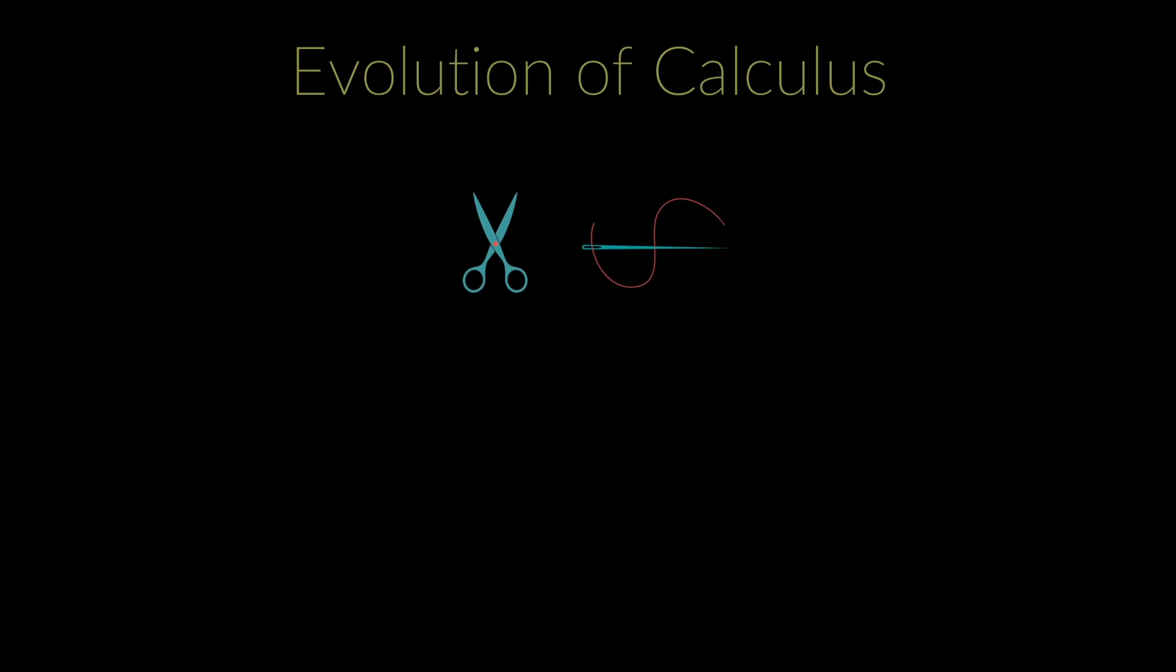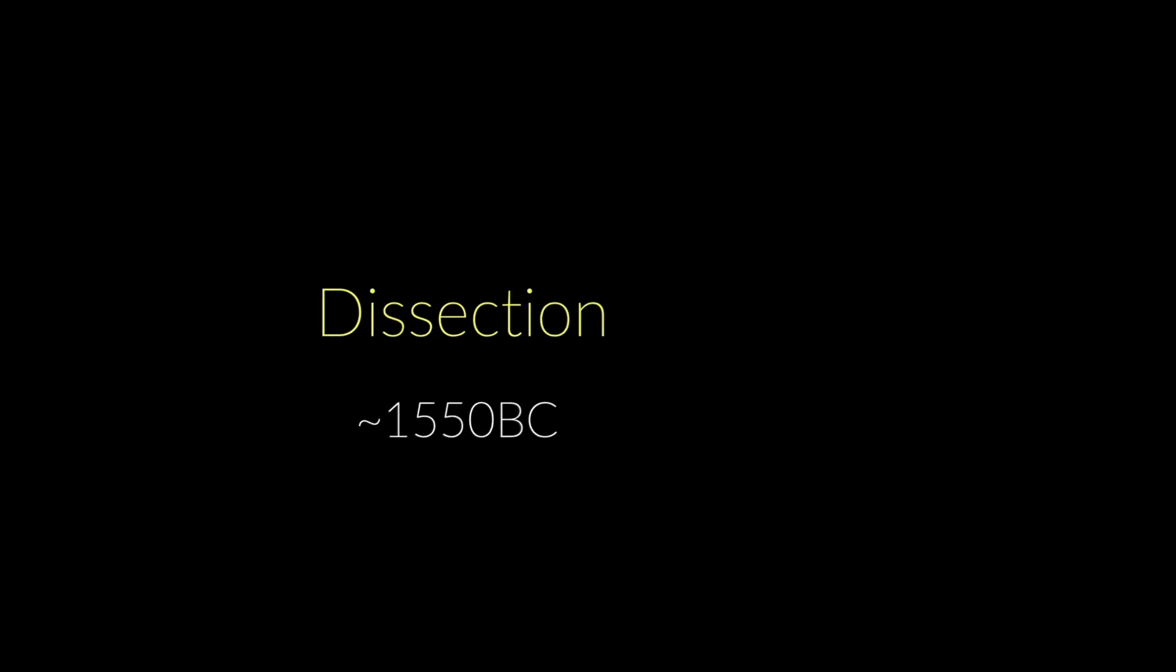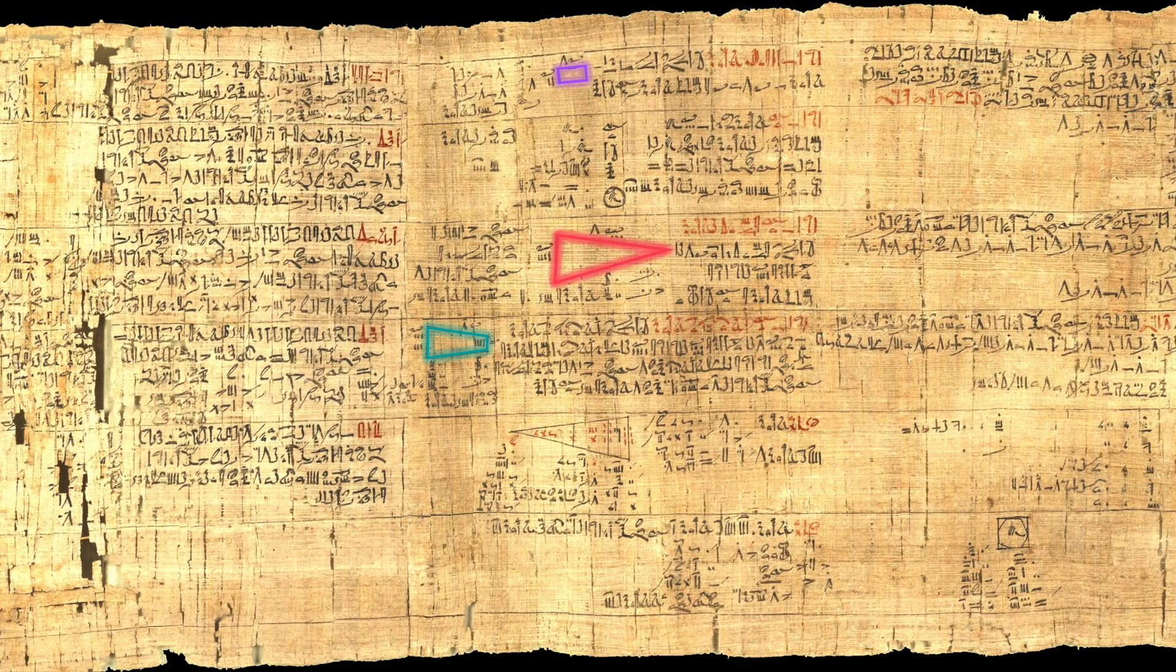But how is all of this related to calculus? See, in the last video, we talked about how the two main processes of calculus are cutting and stitching. And the history of calculus is the history of the evolution of these cutting and stitching processes, which we can divide into five main methods. And the first method, dissection, is what is believed to have been used by the ancient Egyptians to calculate areas and volumes of different shapes.